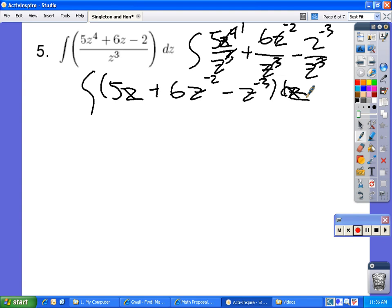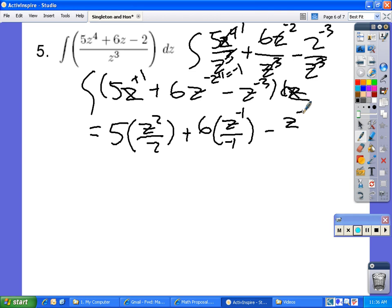To integrate this, it would be z squared over 2 because we're adding 1. Plus 6z negative 1 over negative 1, we're adding 1 so this would be negative 1. Minus z negative 2 over negative 2. Plus c.